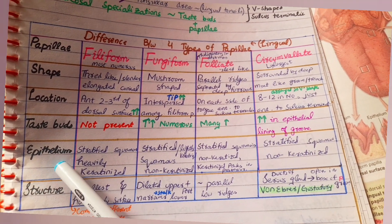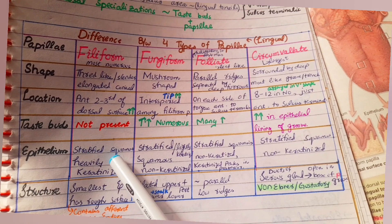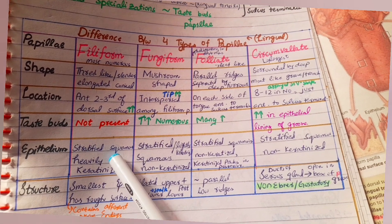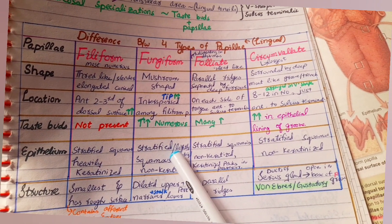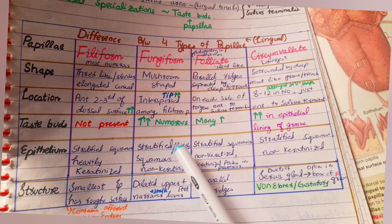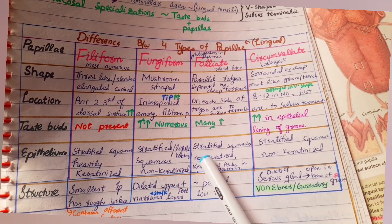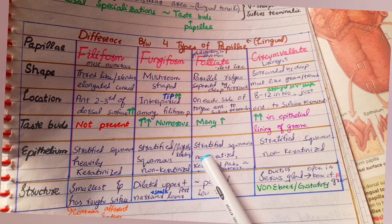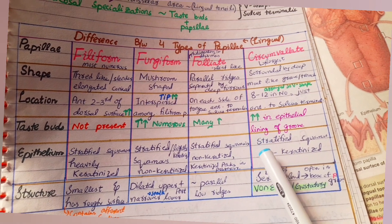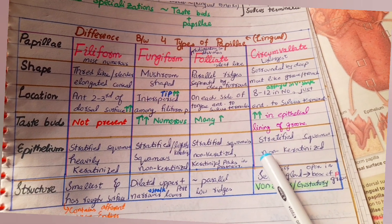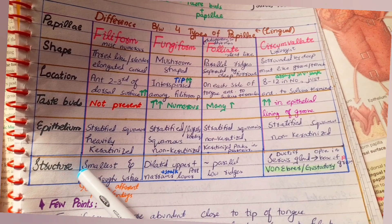Regarding the epithelia of the papillae: all papillae are covered by stratified squamous non-keratinized epithelium, except filiform papillae, which are covered by stratified squamous heavily keratinized epithelium. Fungiform papillae are also lightly keratinized, and foliate papillae have keratinized peaks in the posterior part.